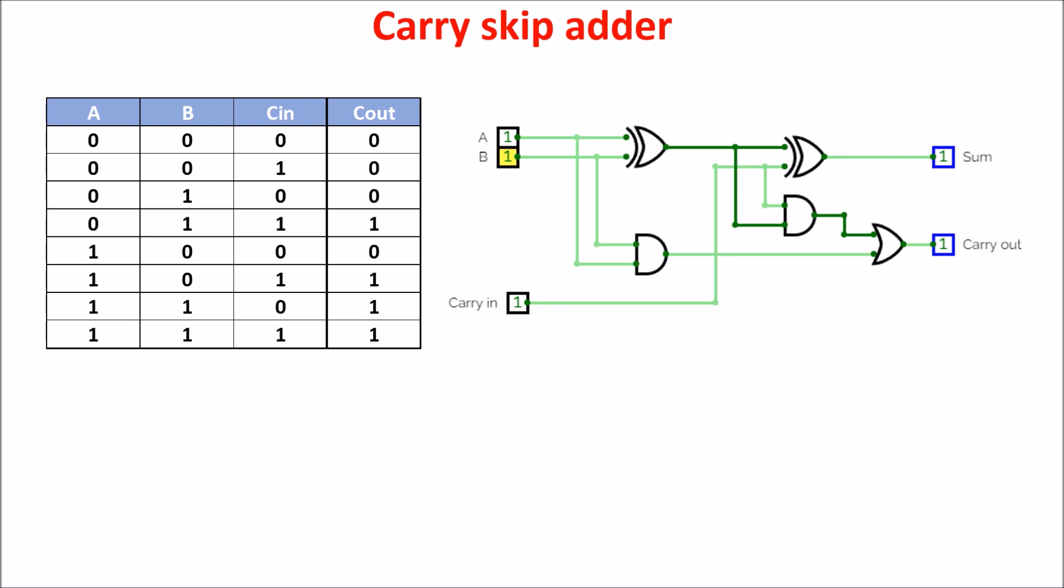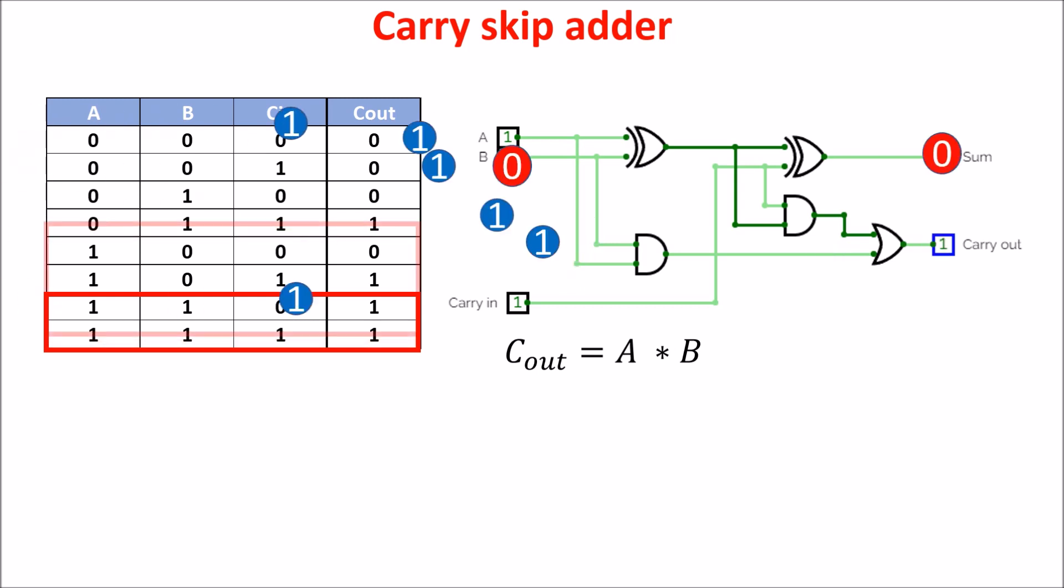Now, let's see if we can build a faster adder. We have to face the carry propagation problem. So, let's see how the carry is produced. In the table, we see that when A and B are both high, we generate always a carry. So, we can write the carry out as A times B, or A and B. Then, we focus on this part here.